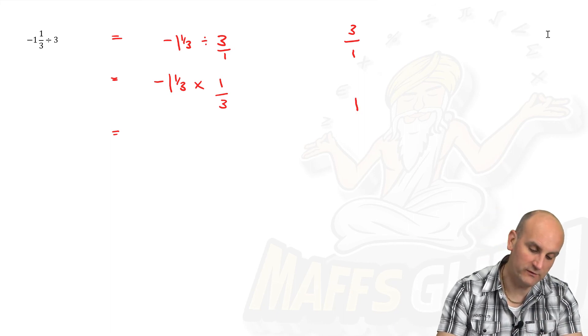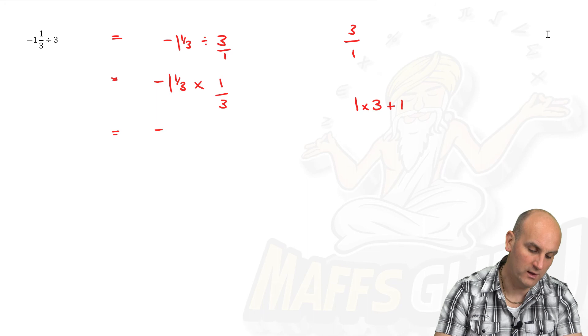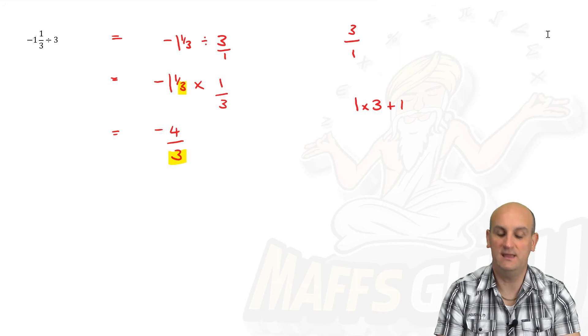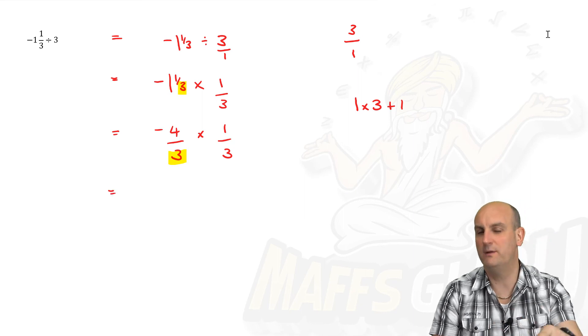So I end up with the big number, which is the one times the denominator, which is the three plus the numerator, which is one. So three plus one is four. So that becomes minus four on three. Remember, the reason it's divided by three is because that number there is a three as well. So that's minus four thirds. We're going to times that by one third.